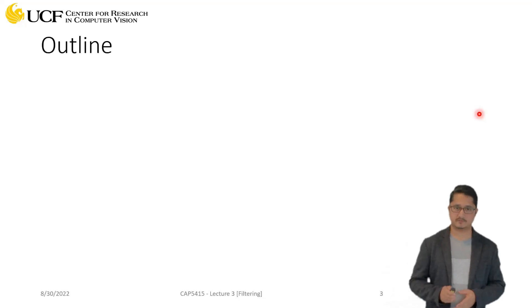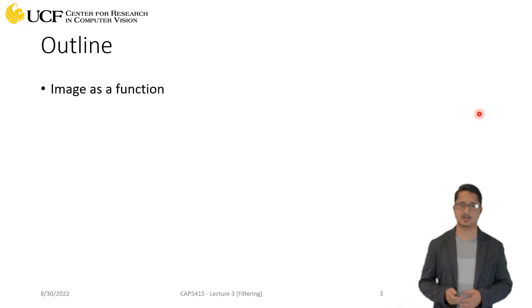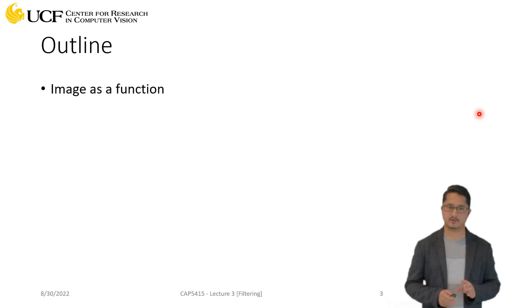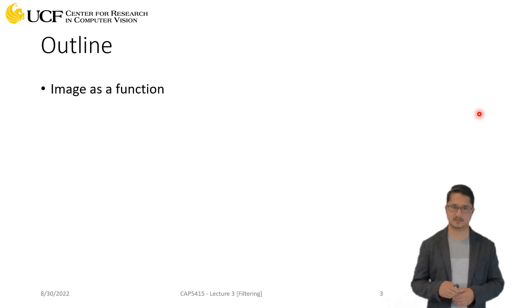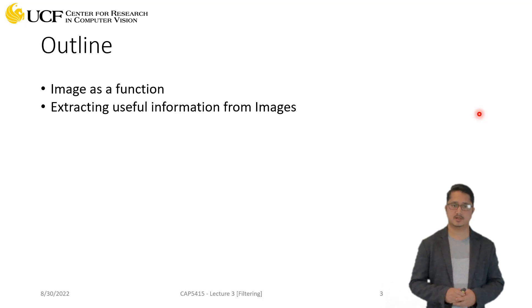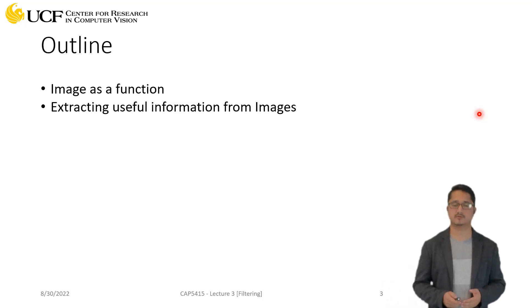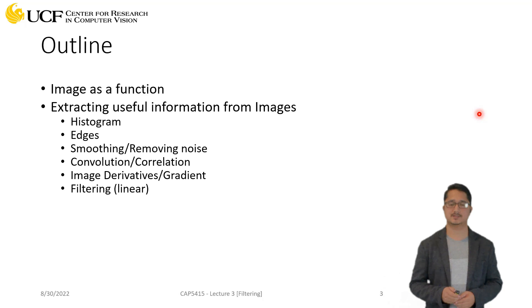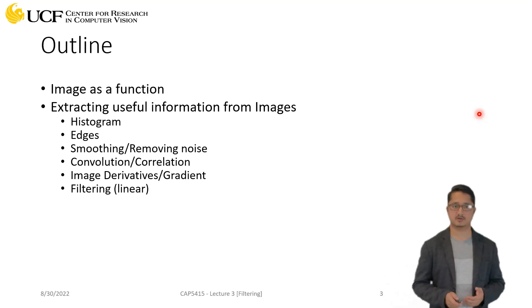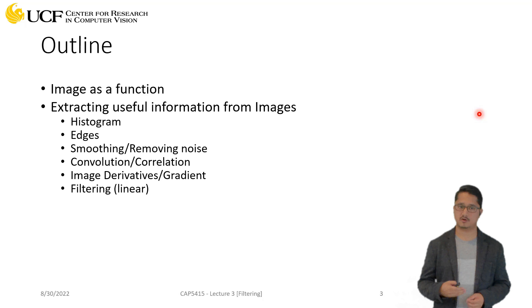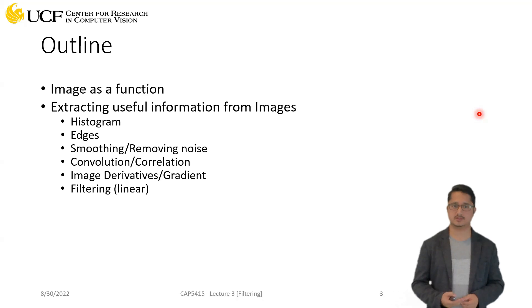In this lecture we'll talk about image filtering. First, we will discuss how we can represent images as a function, and after that we'll talk about how we can extract useful information from these images. This will cover histograms of images, how we can extract edges, and how we can smooth noise in images.